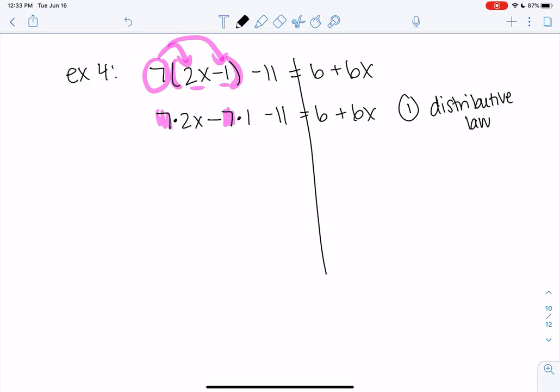So let's simplify. We get 14x minus 7 minus 11. And then we get 6 plus 6x. And then this is where combining like terms comes into play. So like terms are either x terms or y terms or no letter. So like 7 and 11 are constants is what we call them. They're like terms.